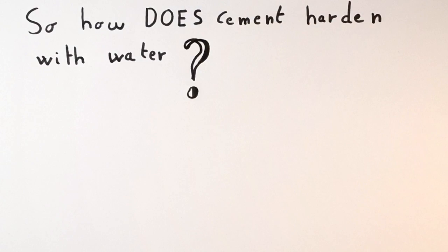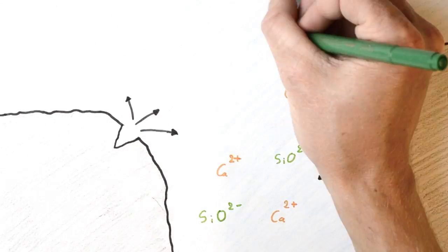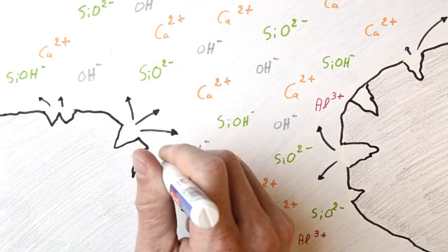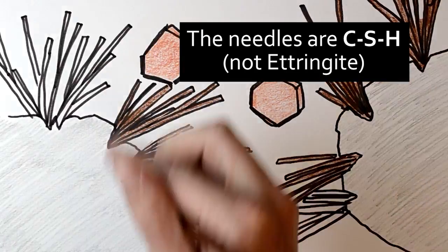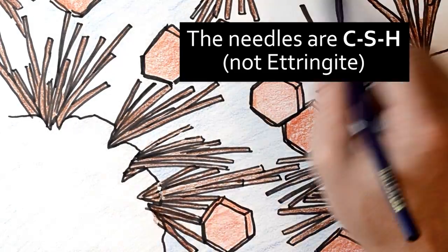Now the question is, how does cement harden with water? Well, the cement grains dissolve and release the calcium and silicon ions into the surrounding water. These ions will form needles at the surface of the grains and platelet-shaped crystals.